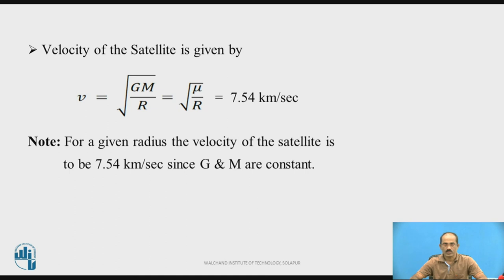Note: for a given orbital radius, the velocity of the satellite is 7.54 km/s, since G and M are constants.